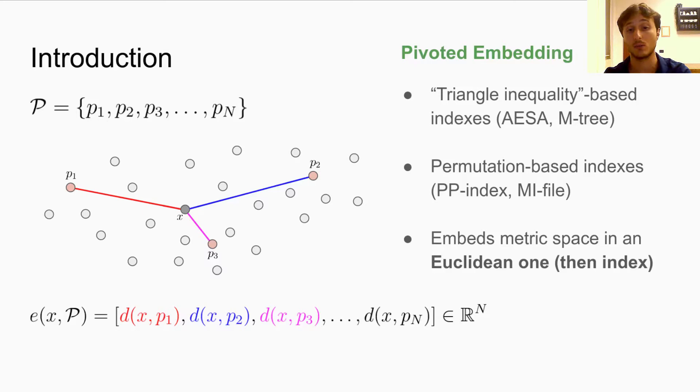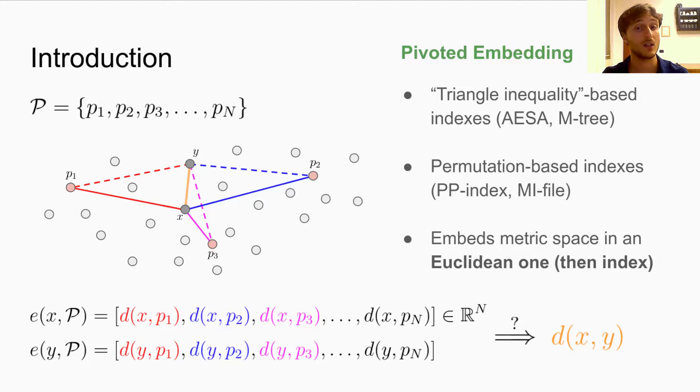In this work, we asked ourselves if we can use machine learning to extract information about the distance between two metric objects, starting from their pivoted embeddings with respect to a common set of reference points.